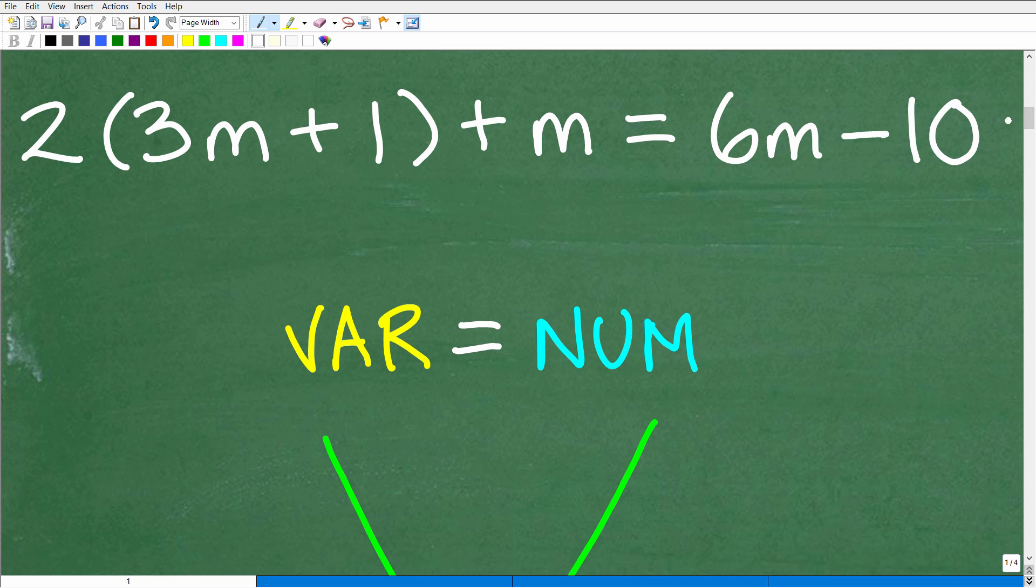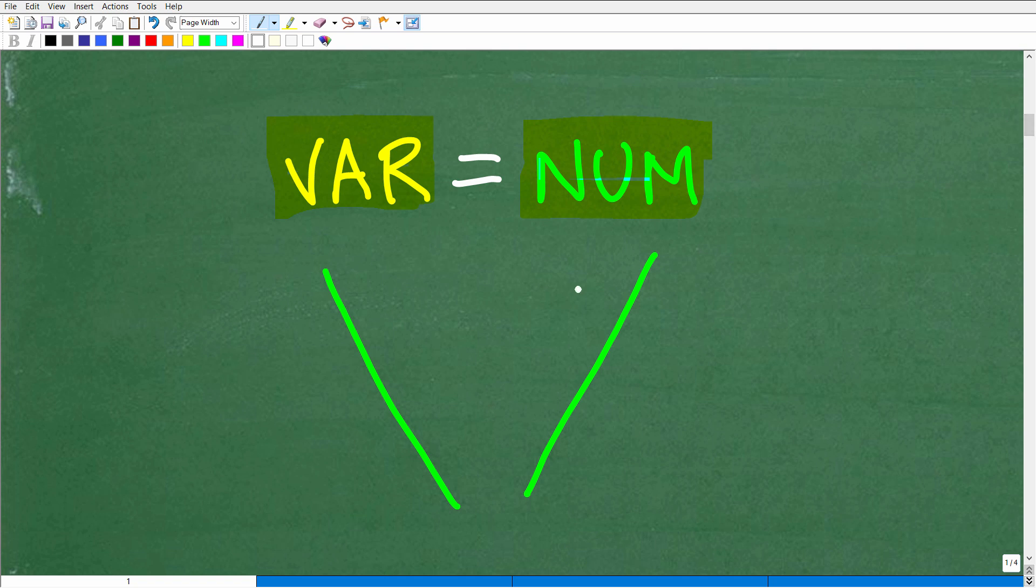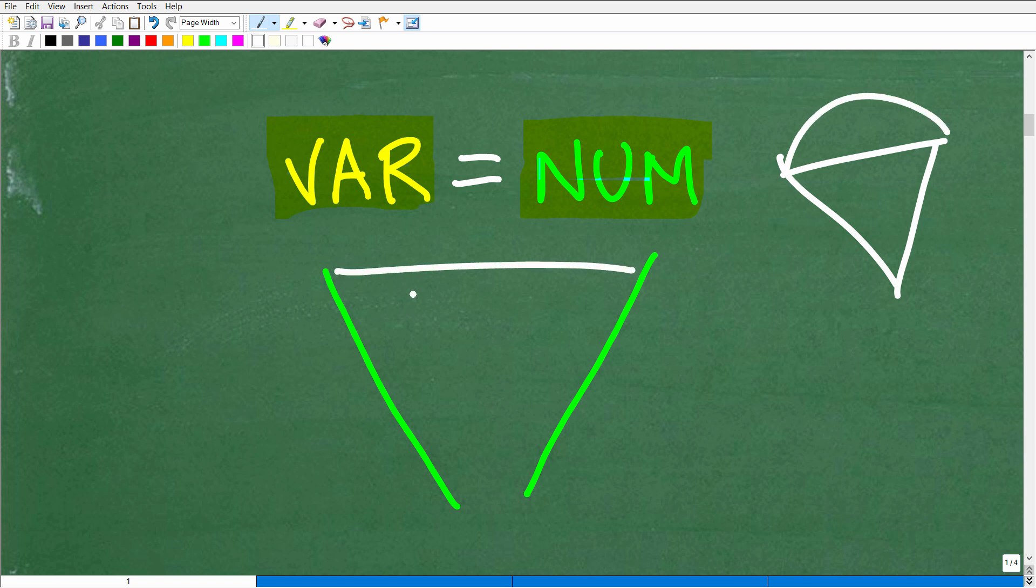Now, a couple things. One, we're dealing with what we call a linear equation. So we're solving for one variable. The variable is m. So in algebra, when you're solving a linear equation, kind of the main strategy is we want to get all of our variable terms, or all of our variables, to the left-hand side of the equation and all of our numbers to the right-hand side. Now, you might be saying, what is this little thing right here, this little cone? Well, this little cone is typically the way your work should look. When you're solving equations, especially linear equations, you kind of want to think of the ice cream cone effect. So in other words, it kind of looks like an ice cream cone.